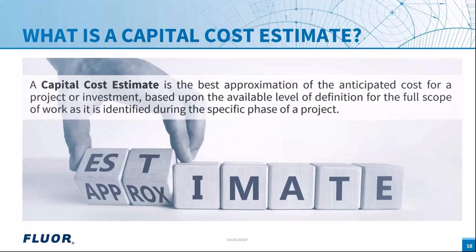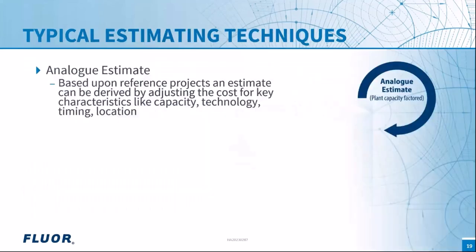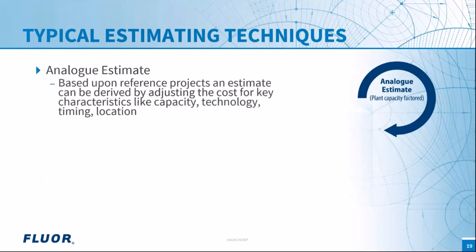There are three main estimating techniques. The first is the analog estimate, where we base ourselves on a reference project and derive the cost by adjusting based on key characteristics such as time, location, and technology differences. It is a fast and easy technique; however, accuracy is lower because we look at the overall picture rather than individual components.